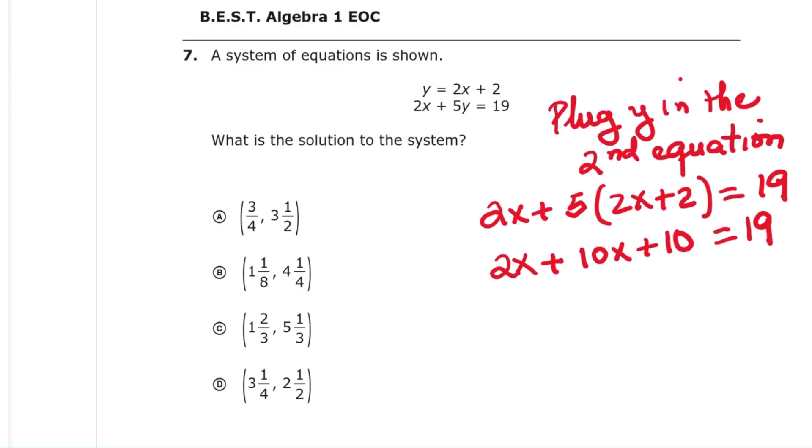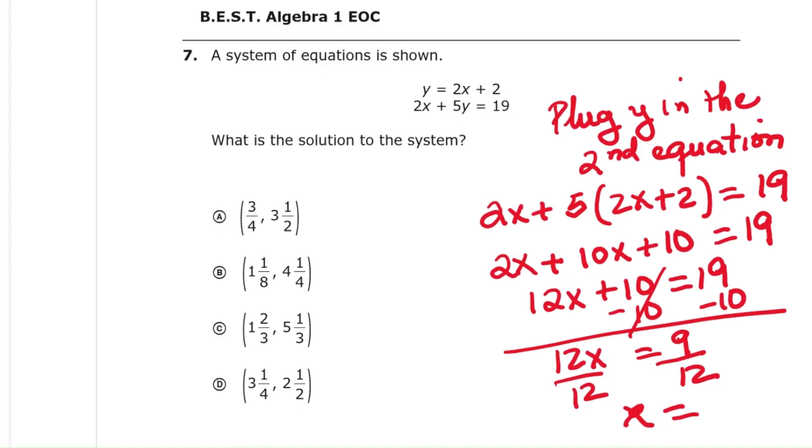Step 3, combine like terms. 2x plus 10x equals 12x. So 12x plus 10 equals 19. Step 4, subtract 10 from both sides. That gives 12x equals 9. Step 5, divide both sides by 12. That gives x equals 3 fourths.